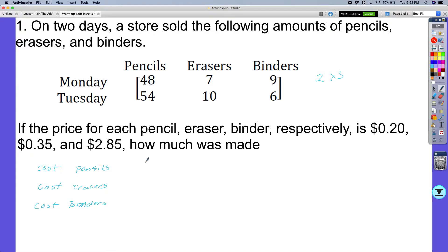So if we remember that, if we just go ahead and write this, I had $0.20, I had $0.35, and then I had $2.85. So I have this 3 by 1 matrix. And now what it wants me to do, it wants me to multiply the two matrices.